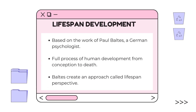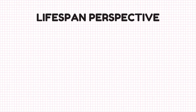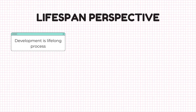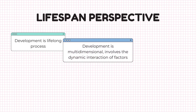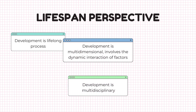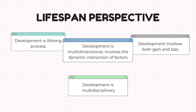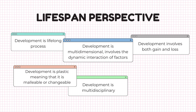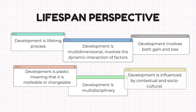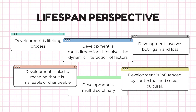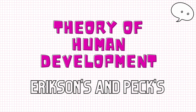Lifespan development is based on the work of Paul Baltes, a German psychologist. It is a full process of human development from conception to death, and Baltes created an approach called lifespan perspective. There are six lifespan perspectives: first, development is a lifelong process; second, development is multidimensional and involves the dynamic interaction of factors; third, development is multidisciplinary; fourth, development involves both gain and loss; fifth, development is plastic, meaning that it is malleable and changeable; and last, development is influenced by contextual and sociocultural factors.